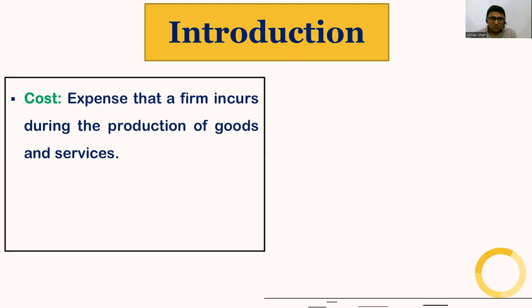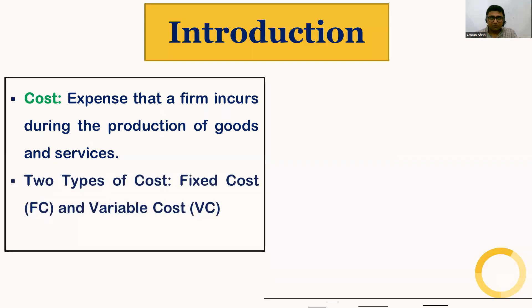Let's begin with the introduction. What do we mean by cost? Cost is the expense that a firm incurs during the production of goods and services. We have two types of costs: fixed cost and variable cost. So total cost is equal to fixed cost plus variable cost.